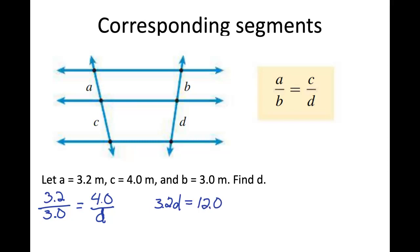Then our next step would be to divide both sides by this 3.2, because it's 3.2 times D. So we're just doing a little bit of algebra here. And then our final answer will be D equals, and 12.0 divided by 3.2 is 3.75.